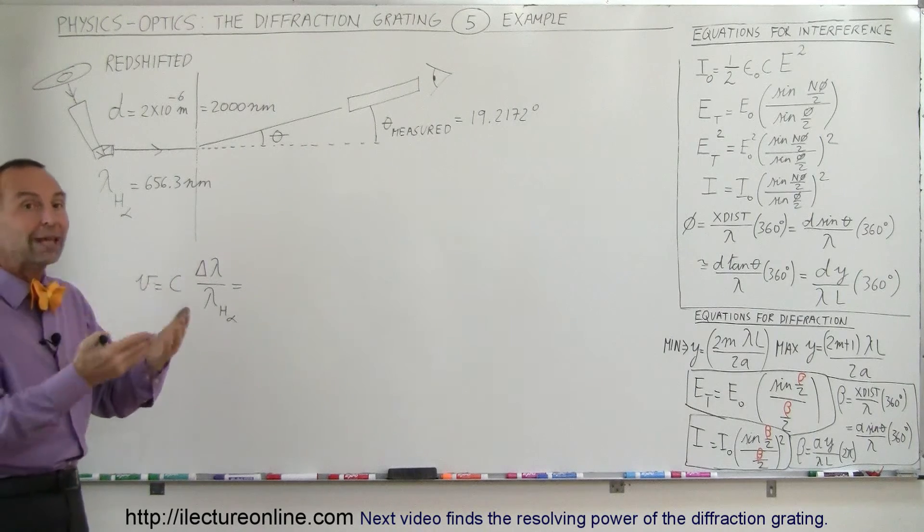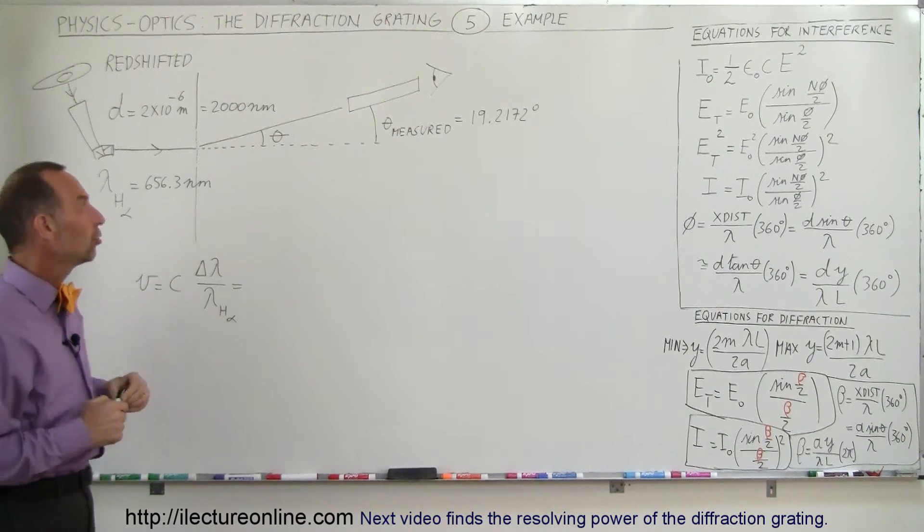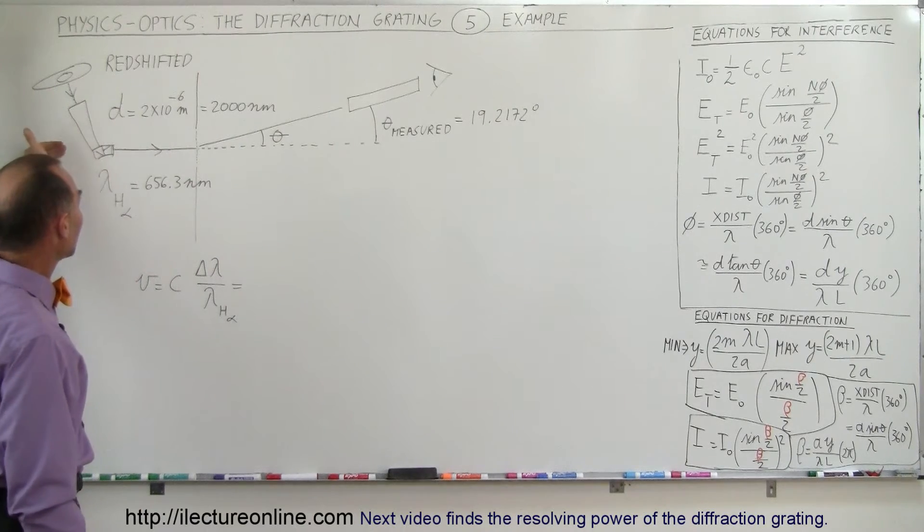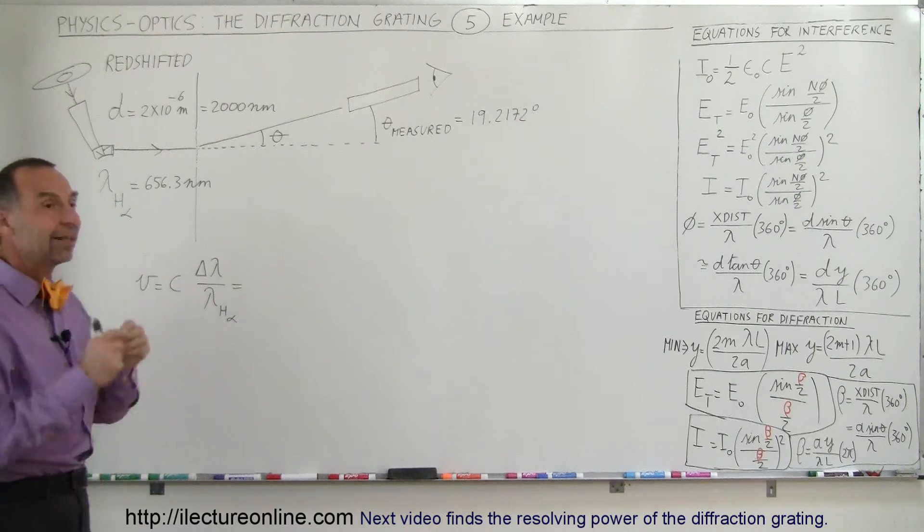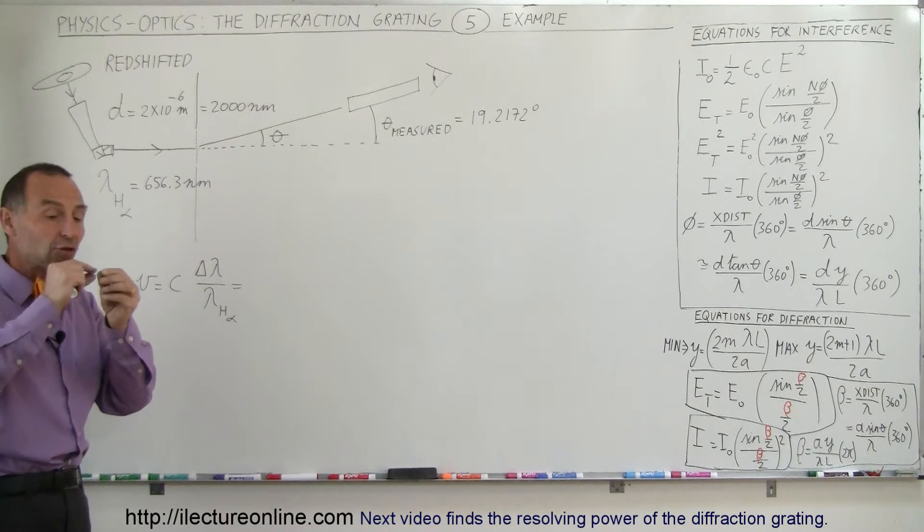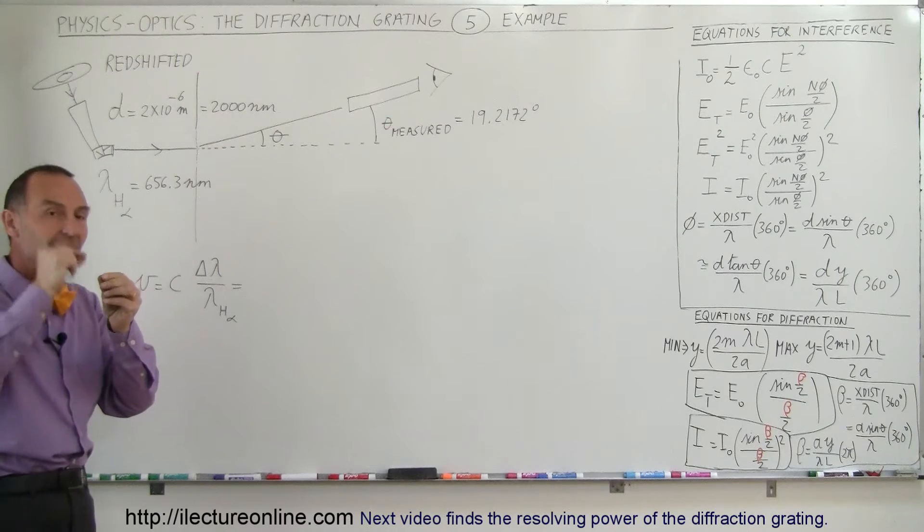The greater the redshift, the greater the velocity away from us. So we collect the light and send it through a diffraction grating, knowing that the H-alpha line, that is the line associated with the electron jump from the third level down to the second level.